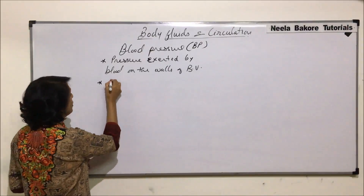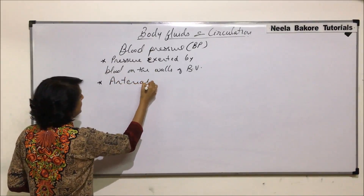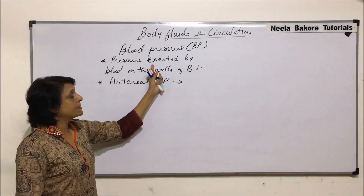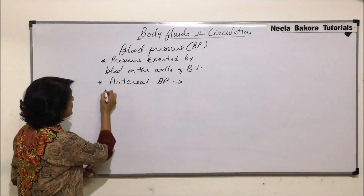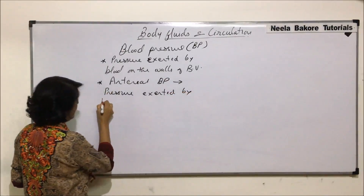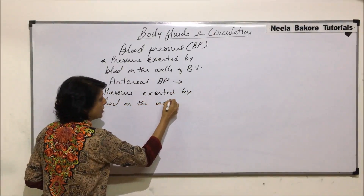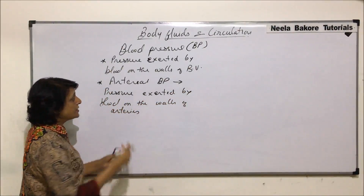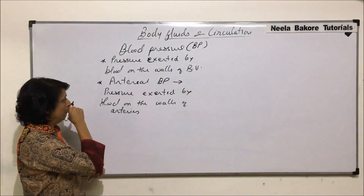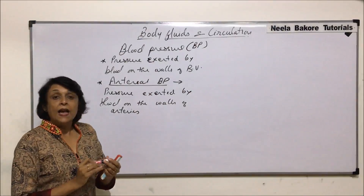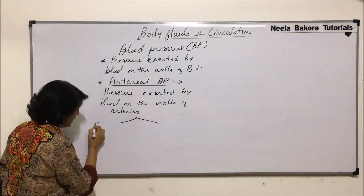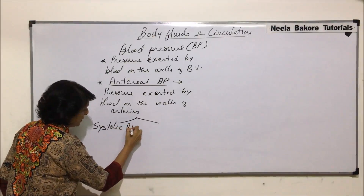When we use the term arterial blood pressure, we are talking about the same concept with one change: arterial blood pressure is the pressure exerted by blood on the walls of arteries specifically. So instead of blood vessels in general, we now have a specific vessel type, and that is why it is known as arterial blood pressure.